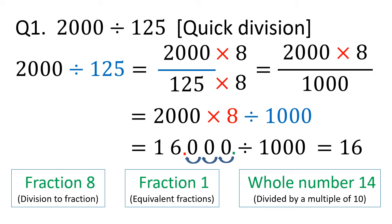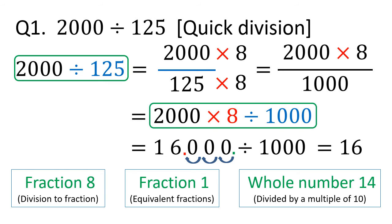Now let's see the important step in this calculation. We had 2000 divided by 125 at the start, but this can be changed to 2000 times 8 divided by 1000. This means that to divide by 125 means to multiply by 8 and then divide by 1000.